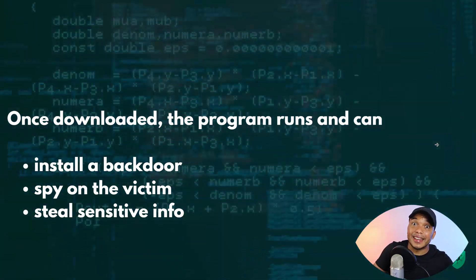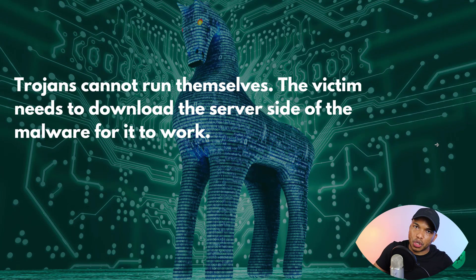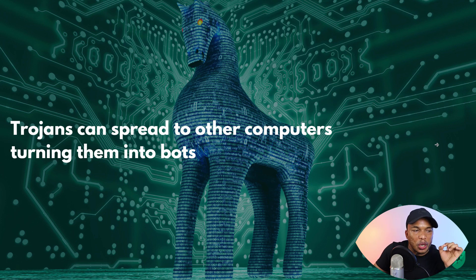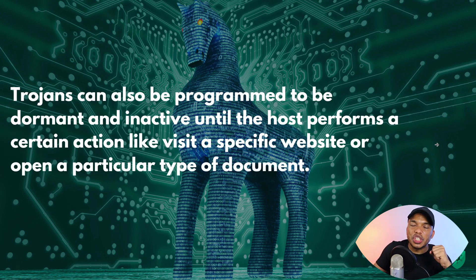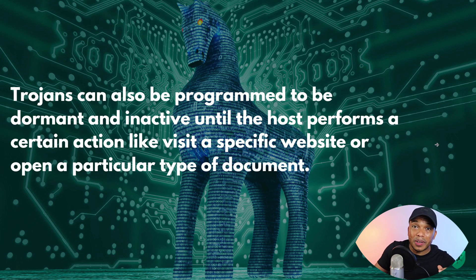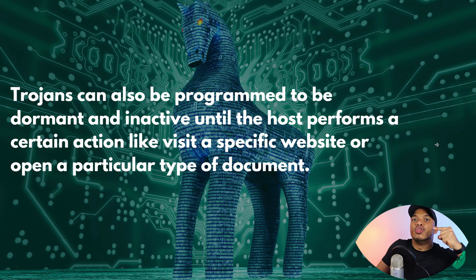There are some distinct features about trojans to know. First, they cannot run themselves — typically a trojan requires the victim to do something, like click a link or visit a website. They can spread to other computers, turning them into bots, as in botnet attacks where computers become zombies after being infected with trojan malware. Trojans can also be programmed to be dormant and inactive until the host performs a certain action, like visiting a specific website or opening a particular document — meaning a victim could have a trojan for weeks or months without knowing, as it waits patiently to become active.